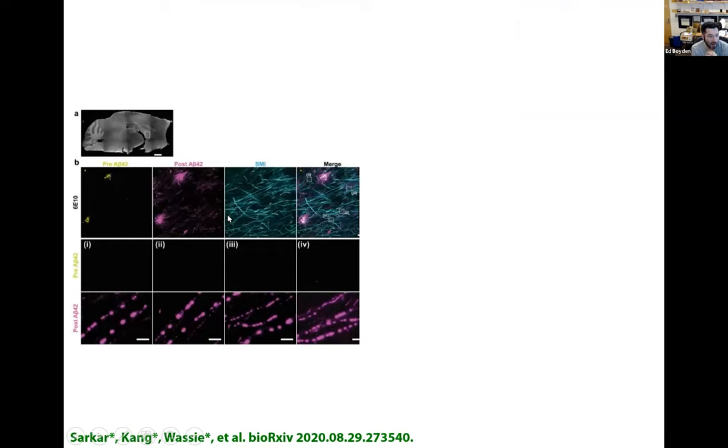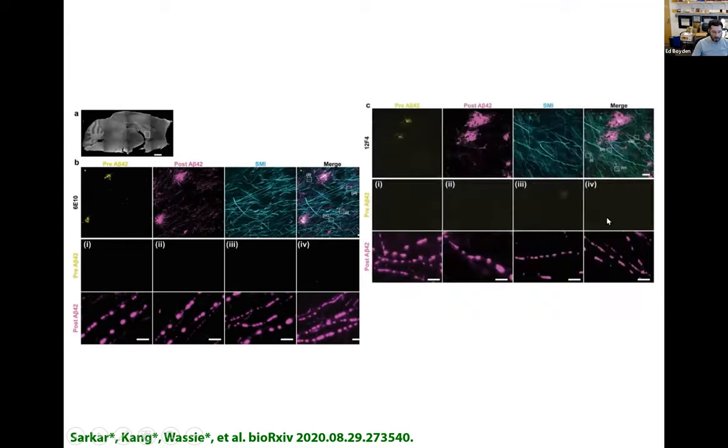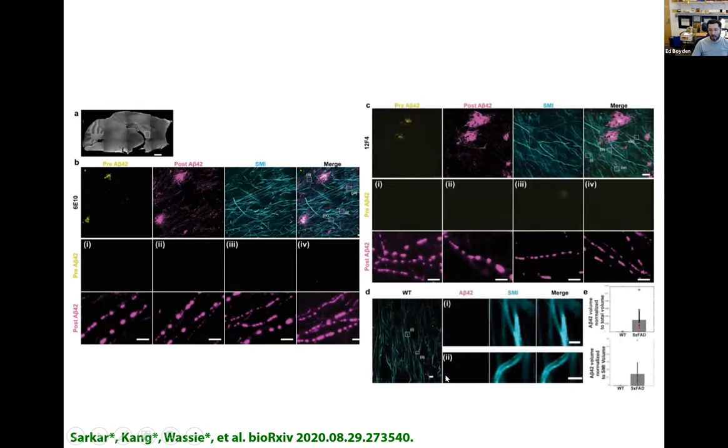Working with Thomas Blanpied's group, we looked at these nano-columns of coordinated pre- and post-synaptic proteins. We saw detailed coordination that were not uniformly distributed, but coordinated across the synaptic cleft, which might help with the precision of neural transmission. Working with Li-Huei Tsai's group, we looked at amyloid plaques in 5XFAD model mice. Yellow is pre-expansion, magenta is post-expansion. The purple images have more detail, and we even saw these amyloid dots, almost periodic structures. This held for two different A-beta-42 antibodies and we did not see them in wild-type mice.